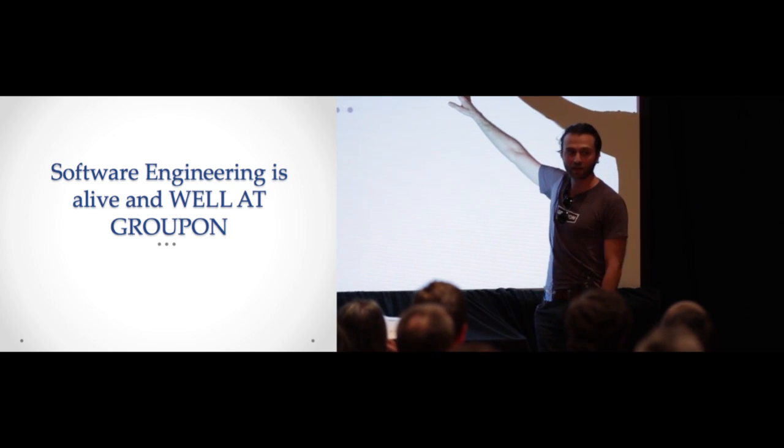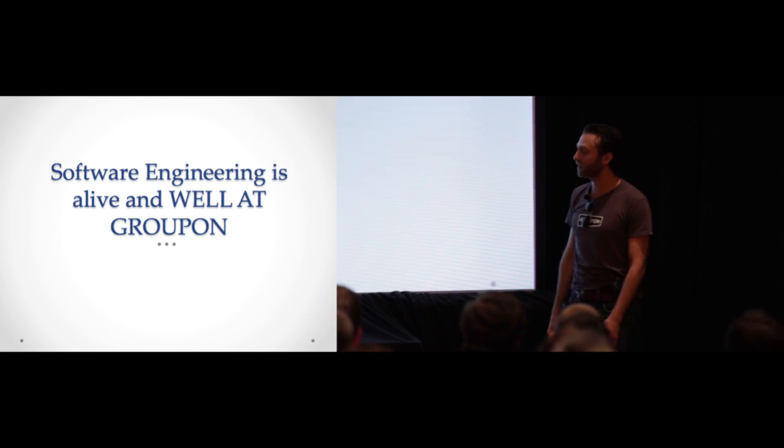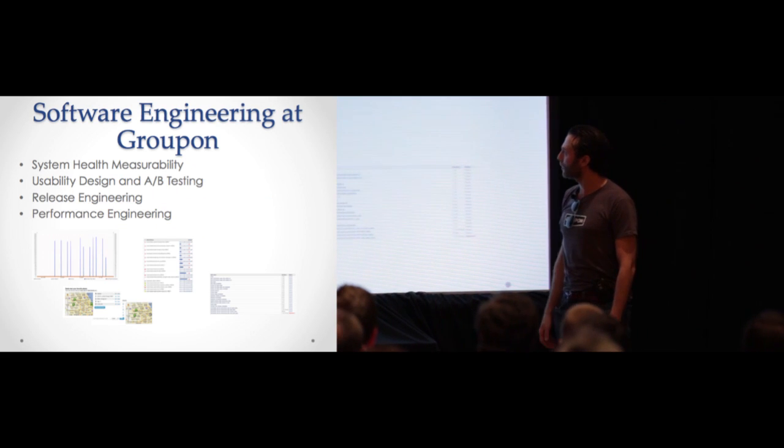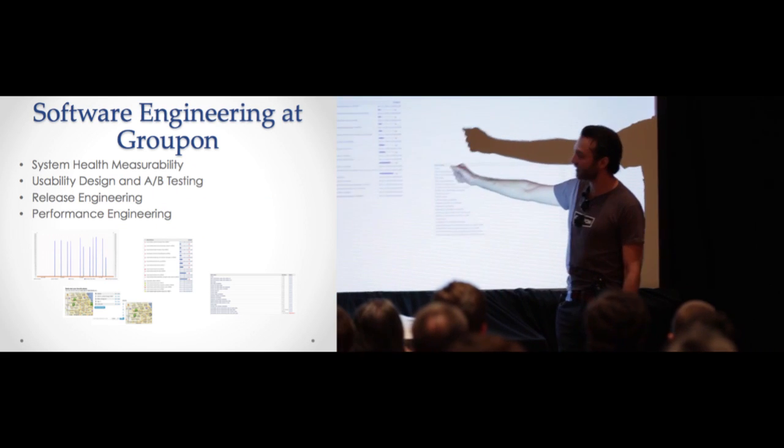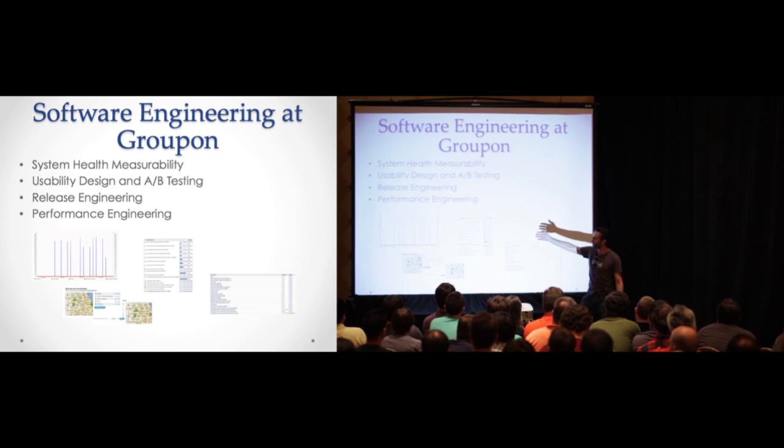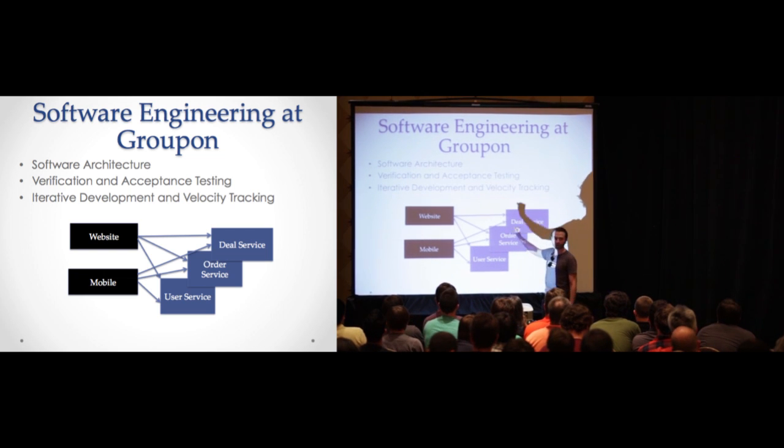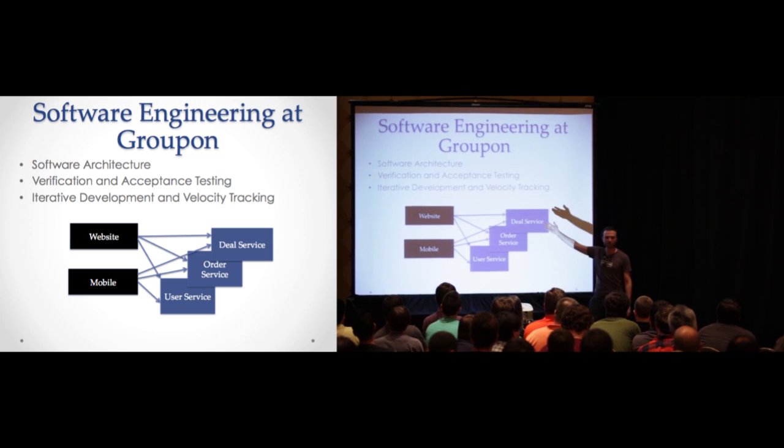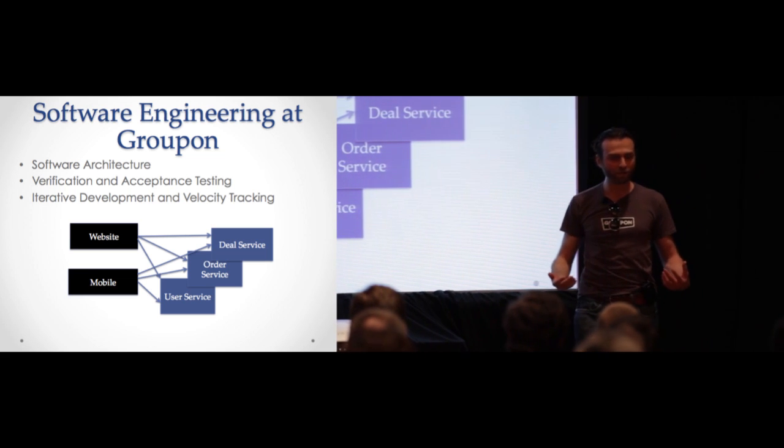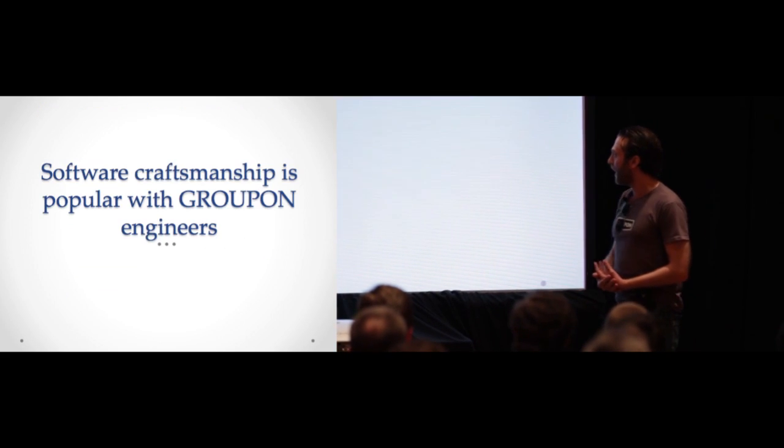However, software engineering is alive and well at Groupon, which I'll give some examples about, given that I've started working there last October. So there's system health measurability of the site, usability design and A/B testing, release engineering, people can do continuous integration, performance engineering. We measure different pages' response times in order to ensure good experience for people. We got software architecture, verification and acceptance testing, iterative development, velocity tracking. So a lot of the software engineering techniques are very helpful in a large environment like Groupon.